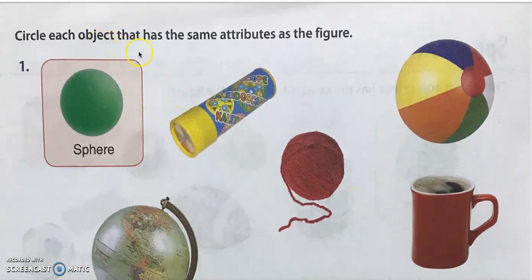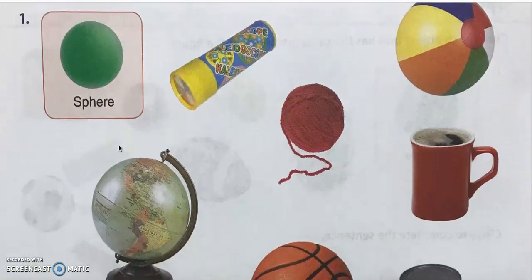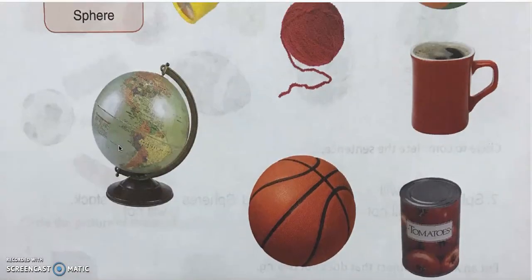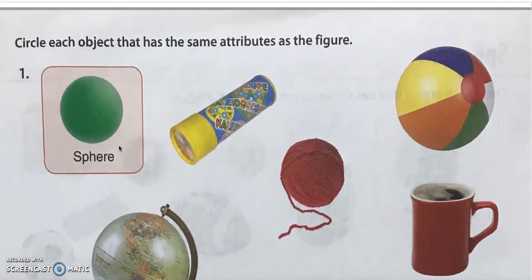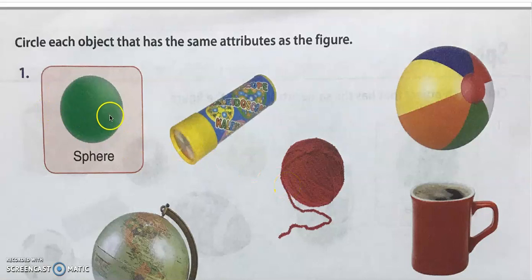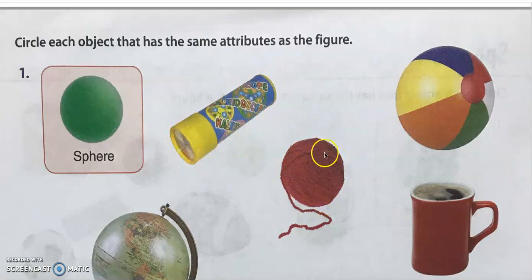Let's circle each object that has the same attributes as the figure. We'll have to look for an object that is in the shape of a sphere — meaning no flat surfaces at all, only curved surfaces. This one is more like a cylinder shape, so no. The yarn has curved surfaces, so go ahead and circle it.